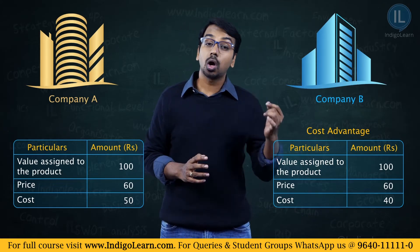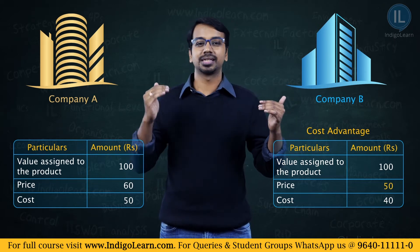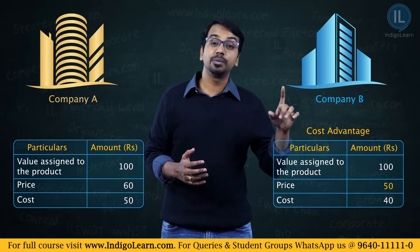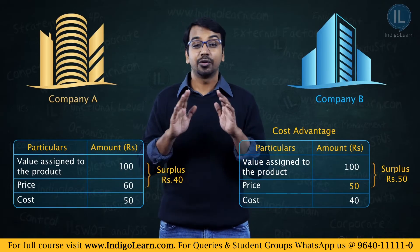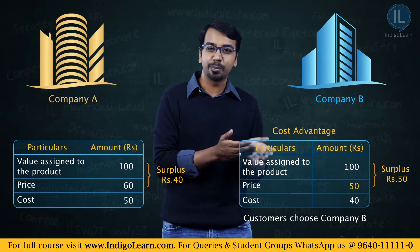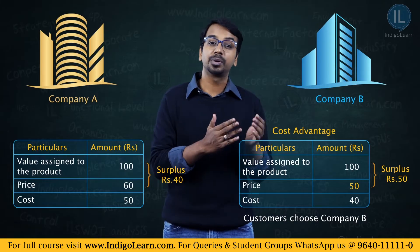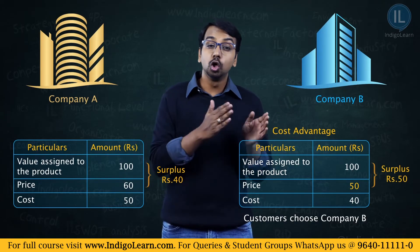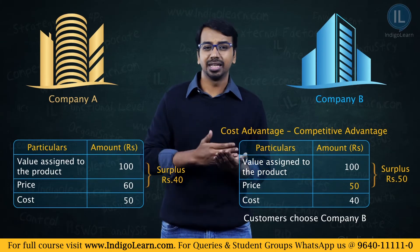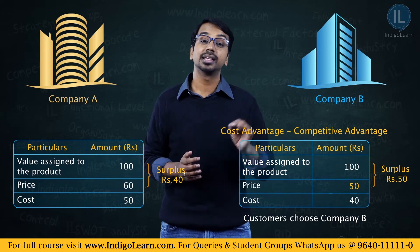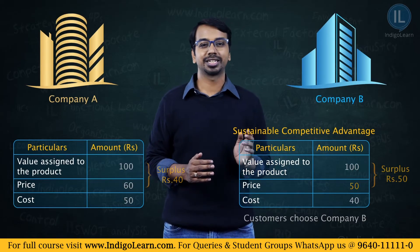Because Company B's cost is 40, if it reduces the price to 50 while Company A still charges 60, the consumer surplus for Company B's customers increases to 50 whereas Company A's surplus remains 40. Customers will obviously choose Company B — same value product at a lower price. A cost advantage allows a company to reduce price, and in the longer run, if the other company cannot match it, this becomes a sustainable competitive advantage.